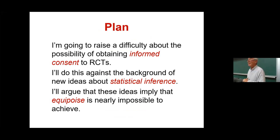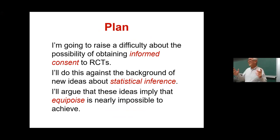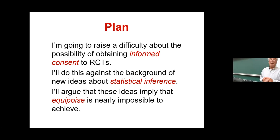I'm going to talk about the difficulty of informed consent in the context of randomized controlled trials, and I'll talk about that against a background of Bayesian ideas about statistical inference. I'll argue that once you take these ideas on board, they imply that the possibility of achieving equipoise in the context of RCTs is almost impossible. That's quite a lot, but I'm going to keep it simple.